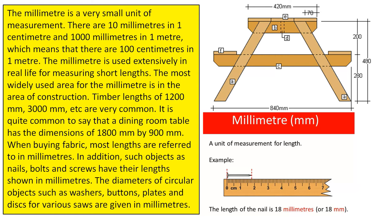In addition, such objects as nails, bolts and screws have their lengths shown in millimetres. The diameters of circular objects such as washers, buttons, plates and discs for various saws are given in millimetres.